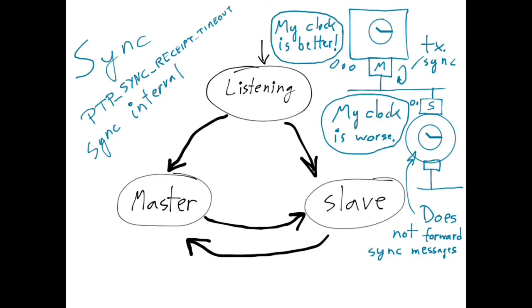This is then basically a rough sketch of how the PTP state machine works if we are only considering the listening state, the master state and the slave state. The actual PTP state machine is obviously much more complex.